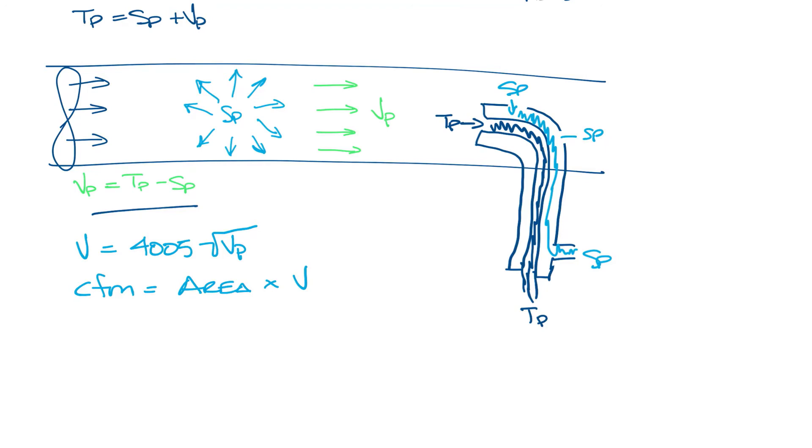Let's plug in some numbers here. Let's say our total pressure is 0.75 and our static pressure is 0.3. The velocity pressure is total pressure minus static pressure, so that's 0.75 minus 0.3 equals 0.45. So velocity equals 4005 divided by the square root of 0.45, and that equals 2687 feet per minute.